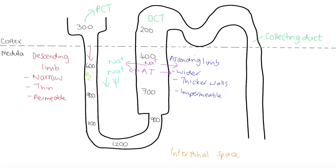Water is therefore able to move out of the descending limb by osmosis. As the filtrate travels down the descending limb, water is continually moving out by osmosis, so the volume of filtrate is getting smaller and the water potential inside the descending limb is decreasing as we move down.